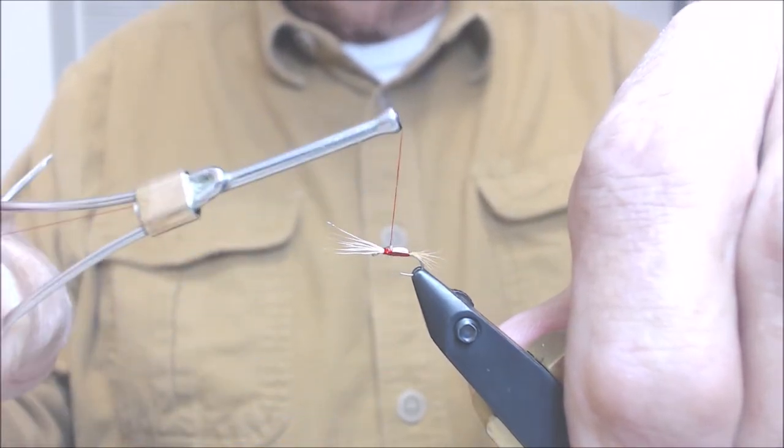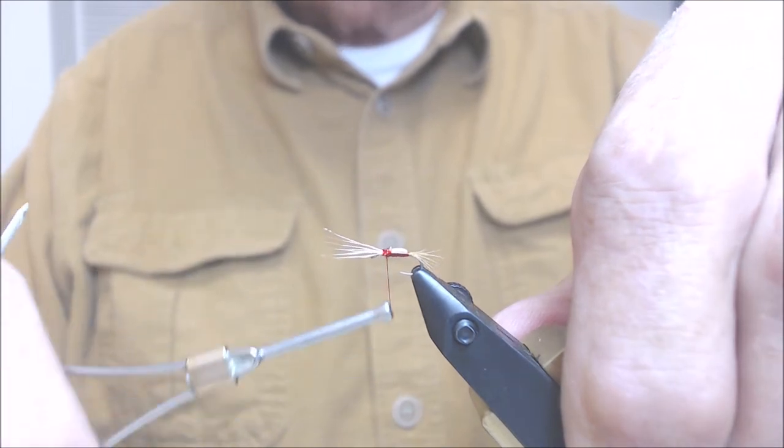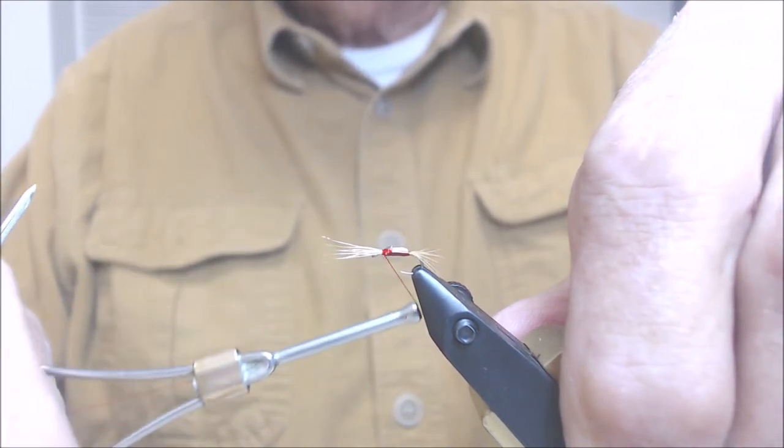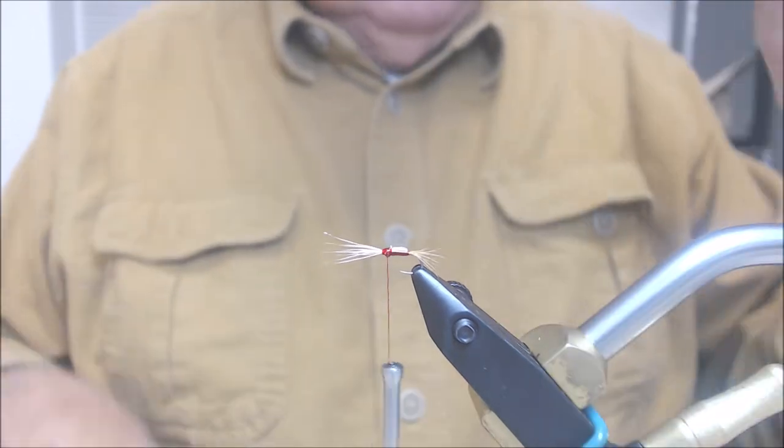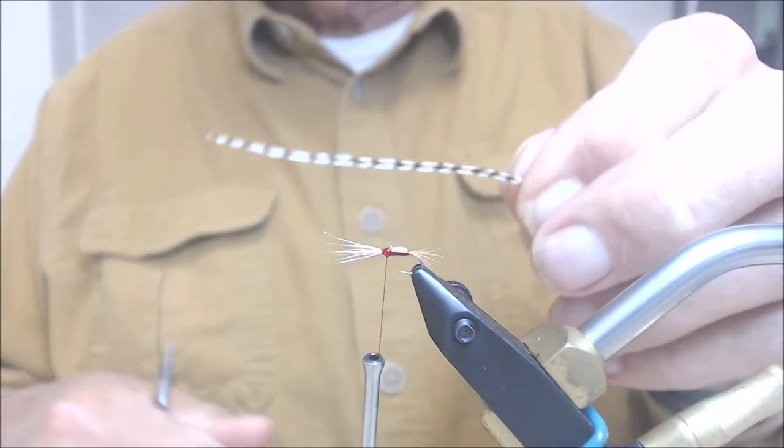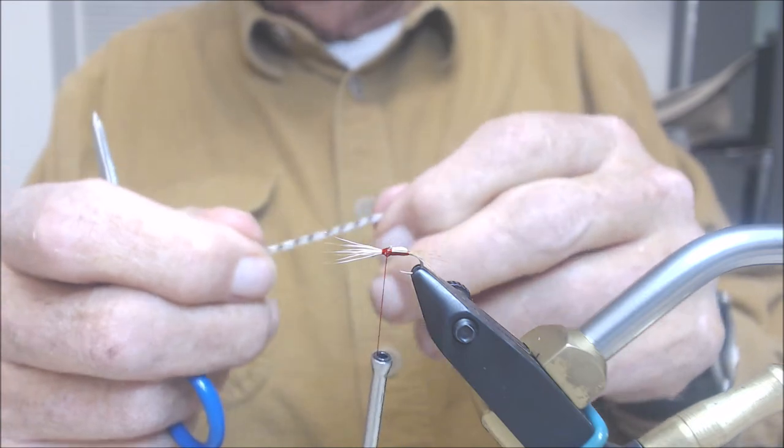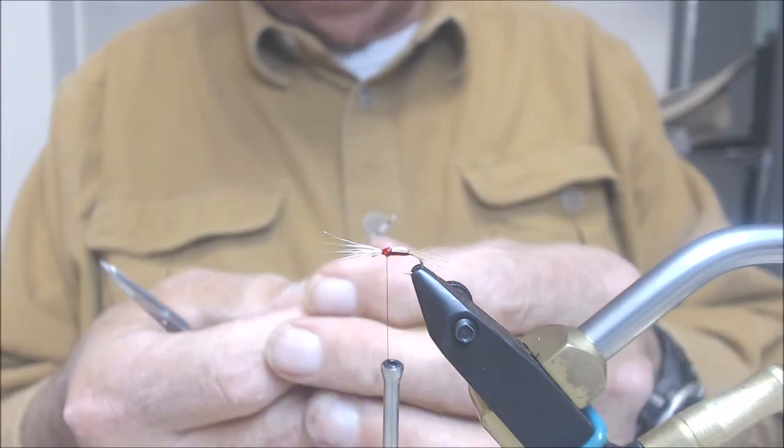Then we'll go ahead and start building a platform or base for our hackle. For the hackle, we're going to use a grizzly, and it's a size 18 because the hook is size 18.